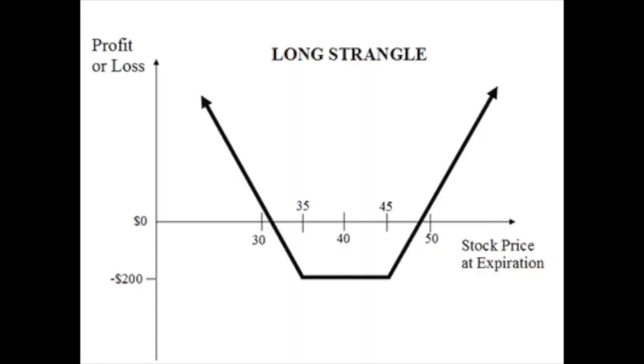The sixth strategy is the long strangle, very similar to the straddle but you buy out-of-the-money calls and puts. You're betting that the stock price will make a very large move either upward or downward. You can use this when there's an FDA approval, earnings, or any event expected to be significant — wherever the stock goes, you can make profit. The stock needs to make a large move to profit, and your maximum loss is the premium paid.